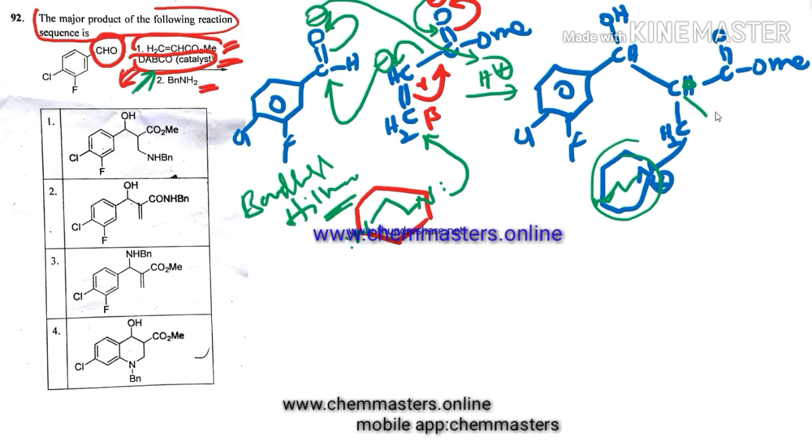Right, in the next step, simply hydrogen cleaves, and here is the formation of nitrogen and oxygen, and which goes here, and double bond comes here, and DABCO cleaves from it.